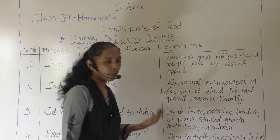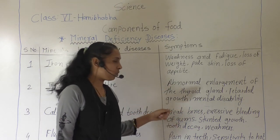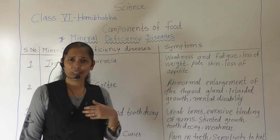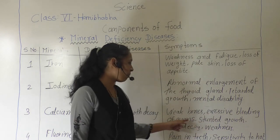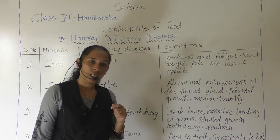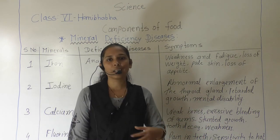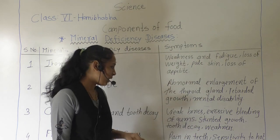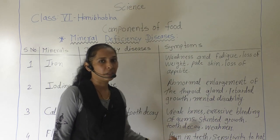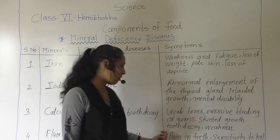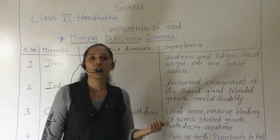How do we know that the body is suffering from bone and tooth decay? Some symptoms include: weak bones that easily break because of external force, excessive bleeding from the gums, stunted growth — meaning physical growth gets stopped — tooth decay where the teeth start to decay, which we have also seen in our previous lessons, and weakness.